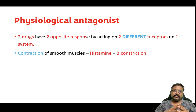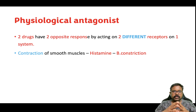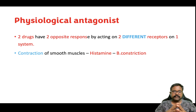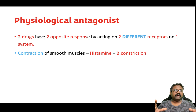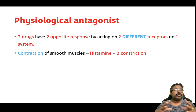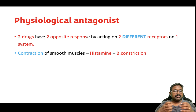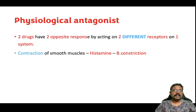Let us take an example. If there is a contraction of smooth muscles, one such physiological agonist that can cause contraction of smooth muscle is histamine. If this smooth muscle is present in the bronchus, when you give histamine there is a contraction of the smooth muscles in the bronchus, leading to bronchoconstriction. This leads to difficulty in breathing because the bronchial airways become narrowed.